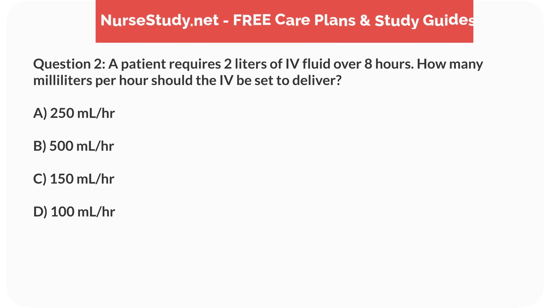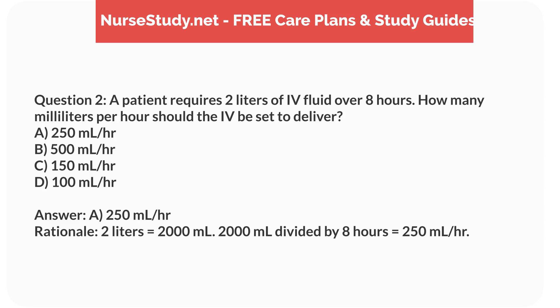Question 2. A patient requires 2 liters of intravenous fluid over 8 hours. How many milliliters per hour should the IV pump be set to deliver? a. 250mL per hour, b. 500mL per hour, c. 150mL per hour, d. 100mL per hour. Answer: a. 250mL per hour. Rationale: 2 liters equals 2,000mL. 2,000mL divided by 8 hours equals 250mL per hour.